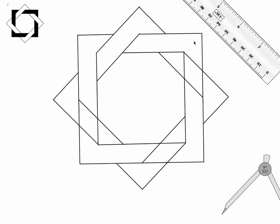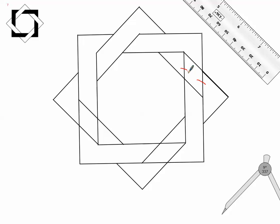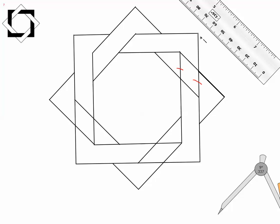I go under here, so that means this line needs to be erased here. I'm going to erase that. So from here to here is good, from here... Am I getting myself confused? Yes. Okay — this square passes under, so these lines are okay. It's this line and this line that are giving me problems, so I'm going to draw that line in here.